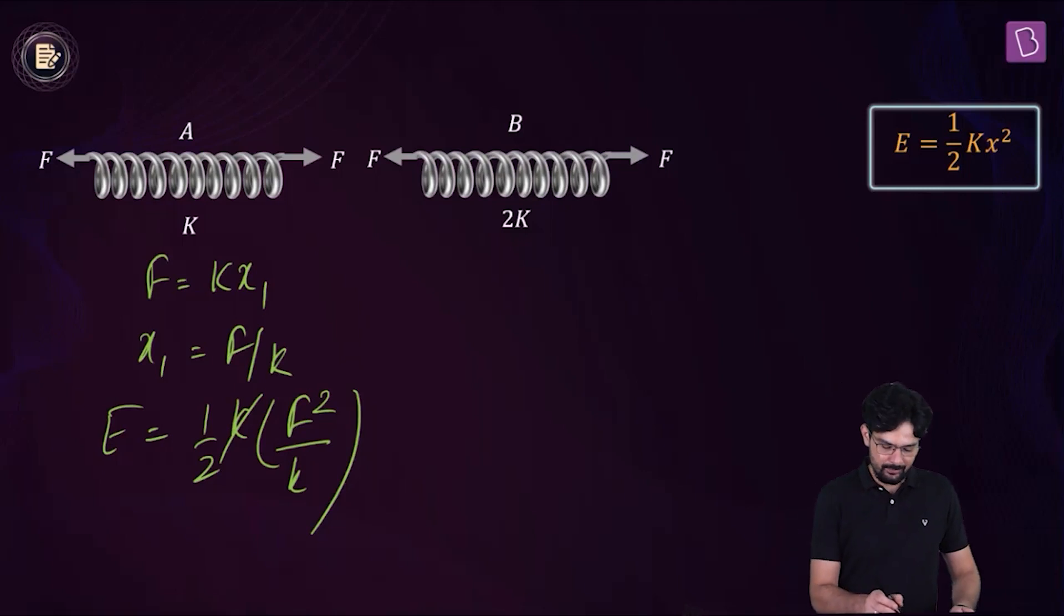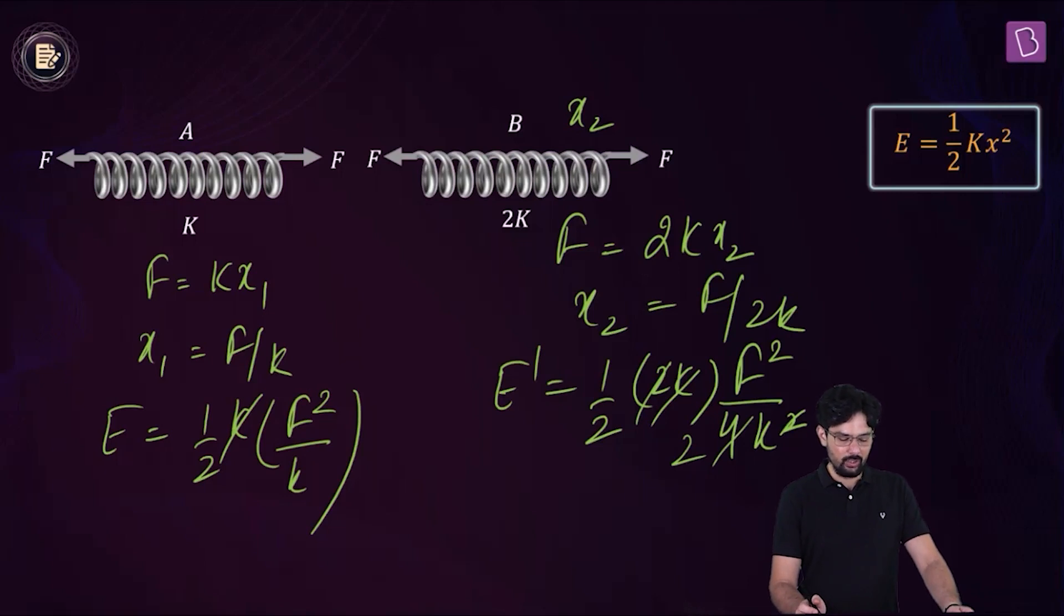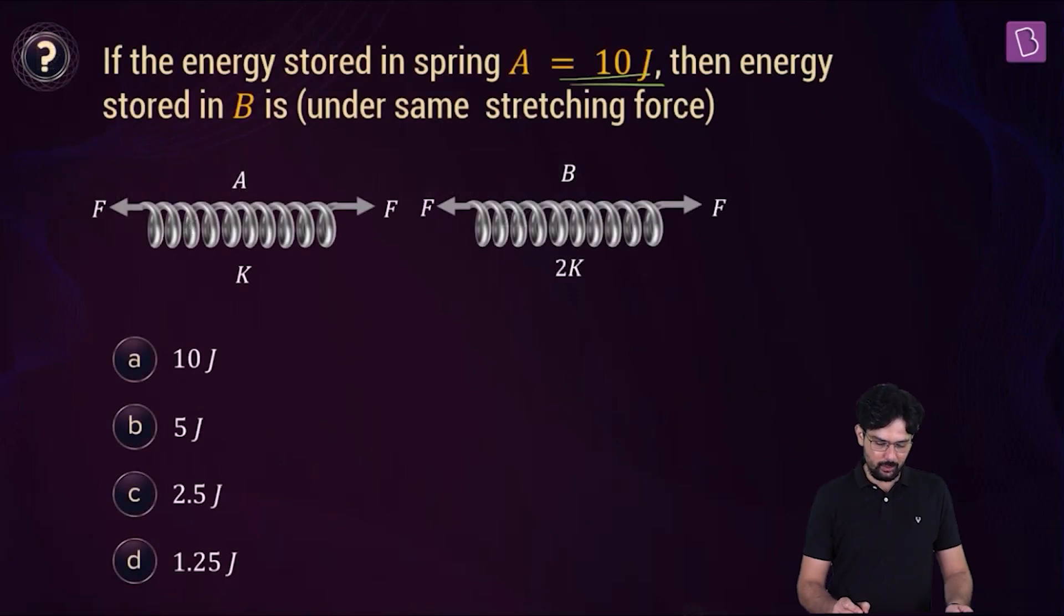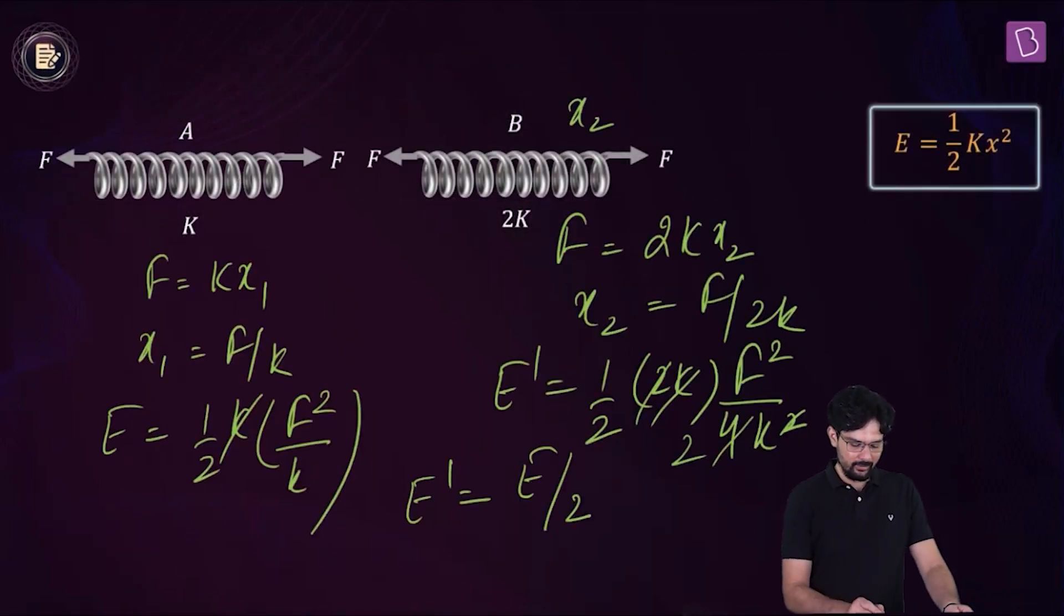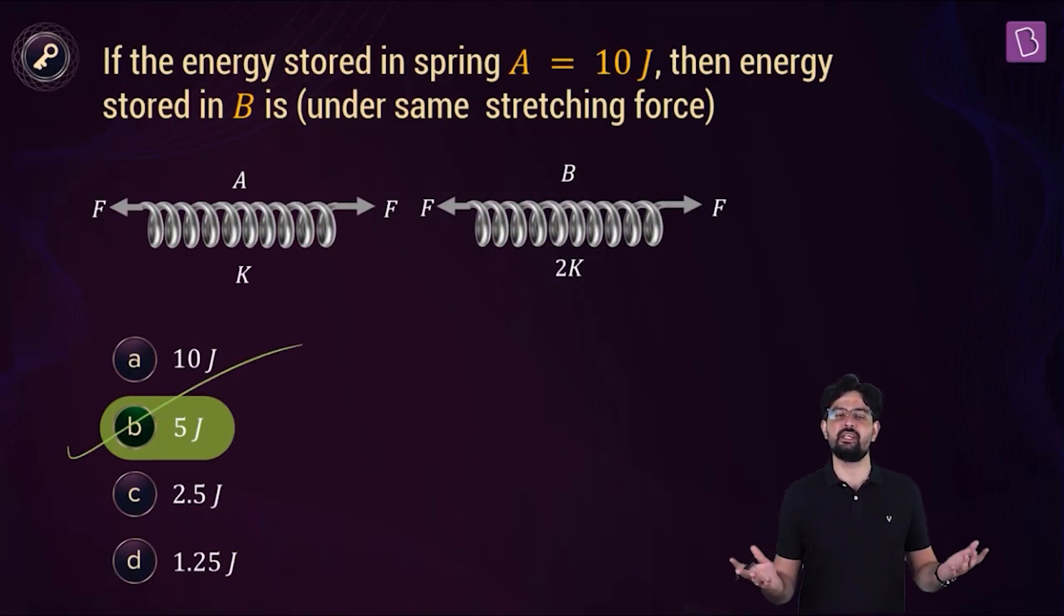Now, how about the extension in the spring B? Let's say this is X2. But this time F is 2K X2. So X2 comes out to be F divided by 2K. And the energy E dash stored in this spring is going to be half into 2K into X2 square. That is F square by 4K. So from here, we have this as F square divided by 4K. But F square divided by 2K is E, which means that E dash is E divided by 2. And how much is E? The energy stored is 10 joule, which means that E dash is 5 joule. And this is the energy stored in the spring B. So there you go. As simple as that, we found out. And in this case, option B must be the right option.